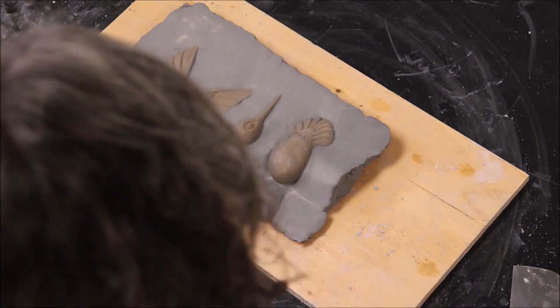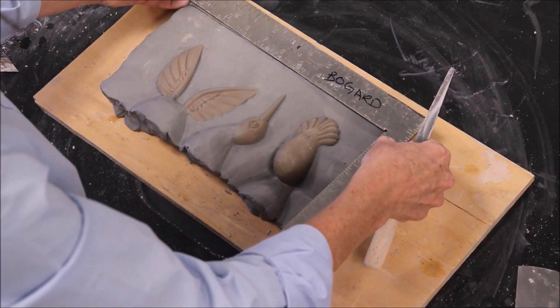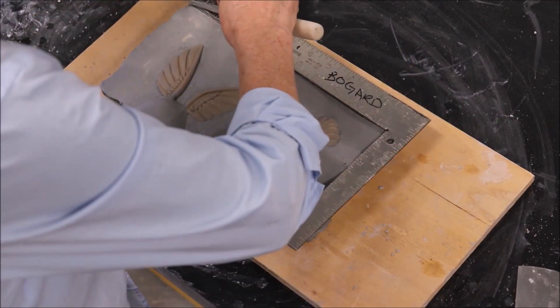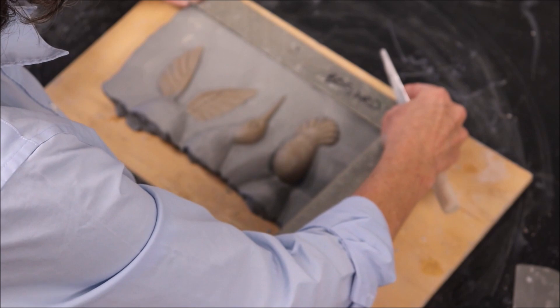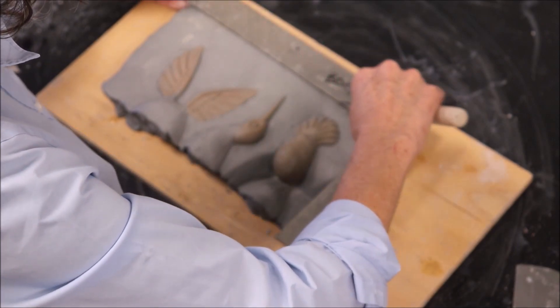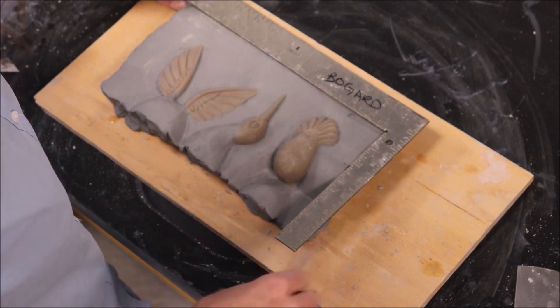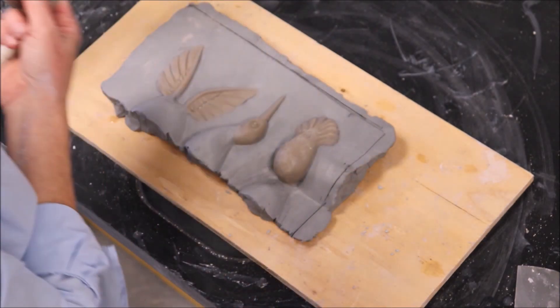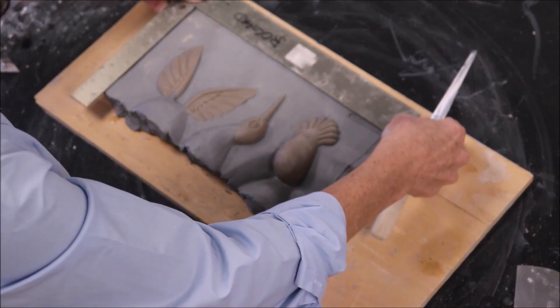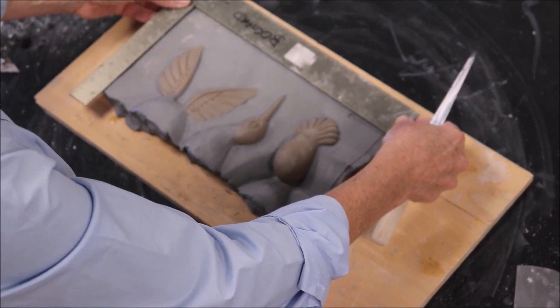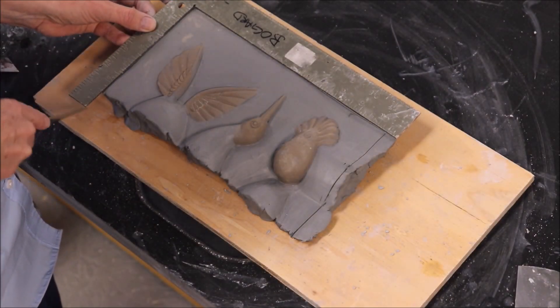Now it's time to square off my bed. I'll use a straight edge to create a nice squared off bed. As I stated earlier, you want to have a nice generous bed. Make sure that you give yourself at least one to two inches away from the hummingbird on all four sides.